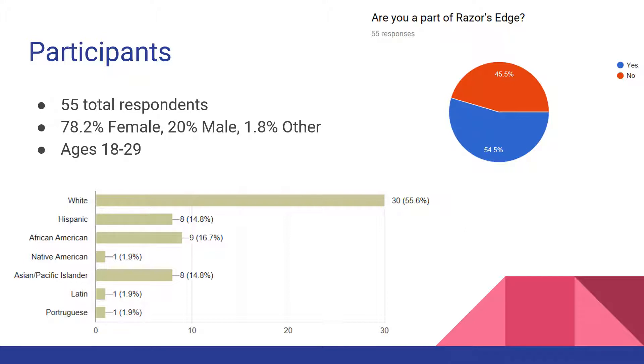About half were Razor's Edge students, half were not. And here I've included some demographic data. About 56% were white, 15% Hispanic, 16% African-American, and the rest are on the chart right there.